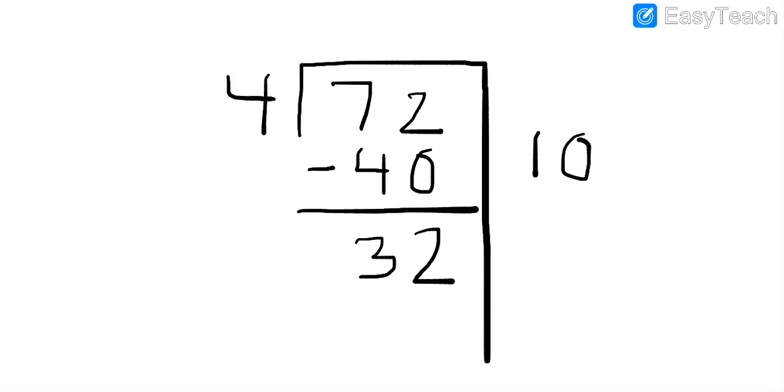Now, I have to think about my fours facts again. So I want to get close to 32 or exactly 32. 4 times what is 32? Yes, 4 times 8. So I'm going to write down 8 here on the side. And then I'm going to record 4 times 8 is 32.